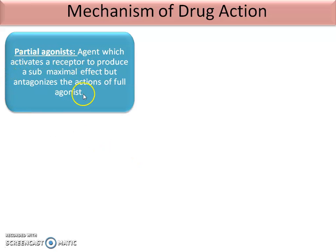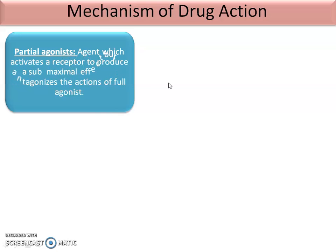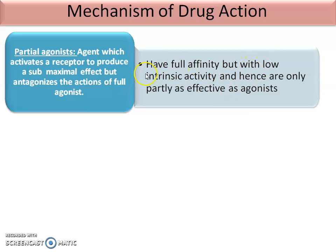Partial agonists are agents which activate a receptor to produce a sub-maximal effect, but antagonize the action of a full agonist. They have full affinity but with low intrinsic activity — meaning the DR complex is perfectly formed, but the pharmacological response is low. Hence they are only partly as effective as a full agonist.